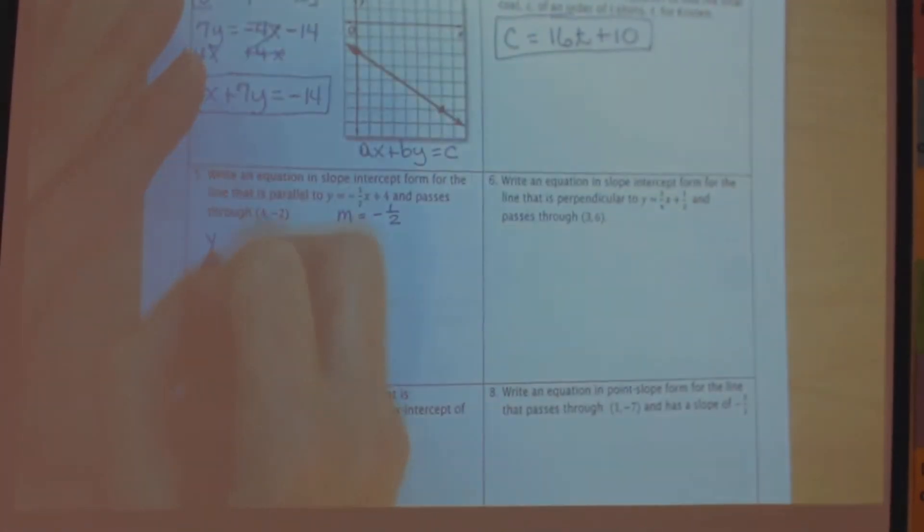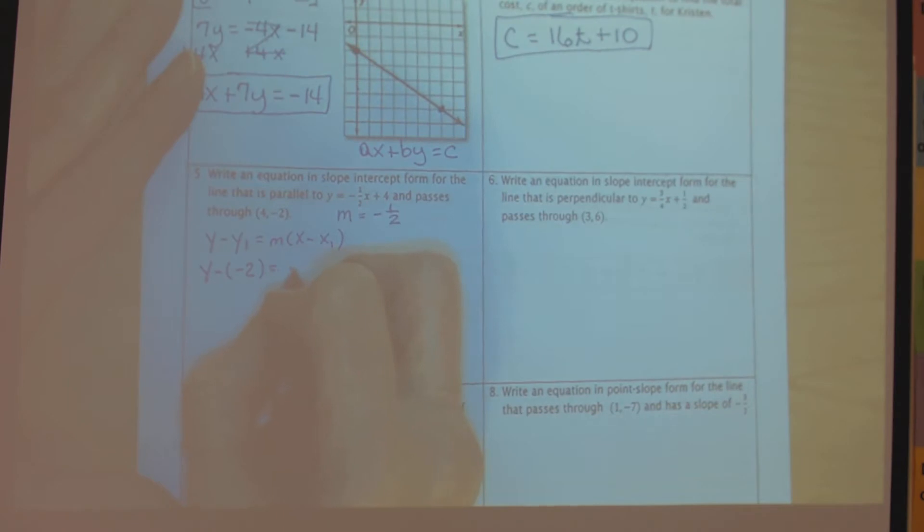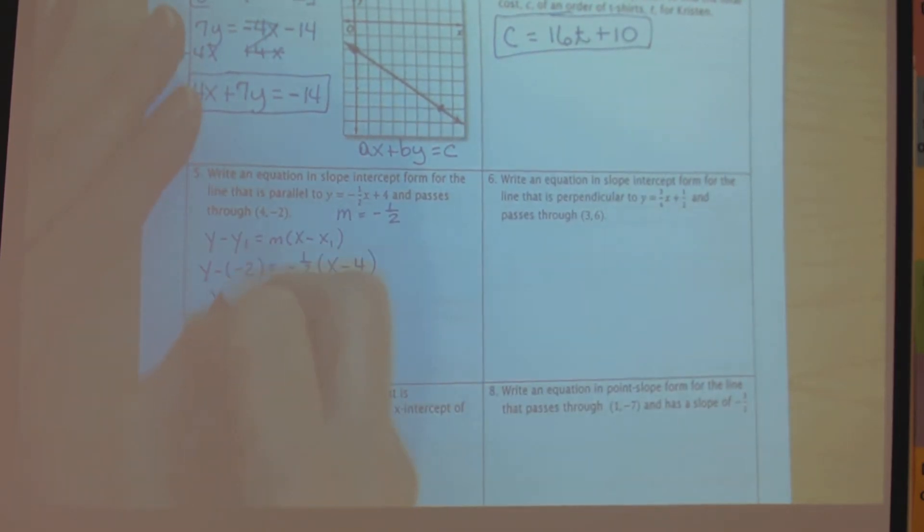So point-slope form looks like this. We simply replace the y sub 1 with the y value from the point, replace m with the slope, and we replace x sub 1 with the x value of that point. Simplify.